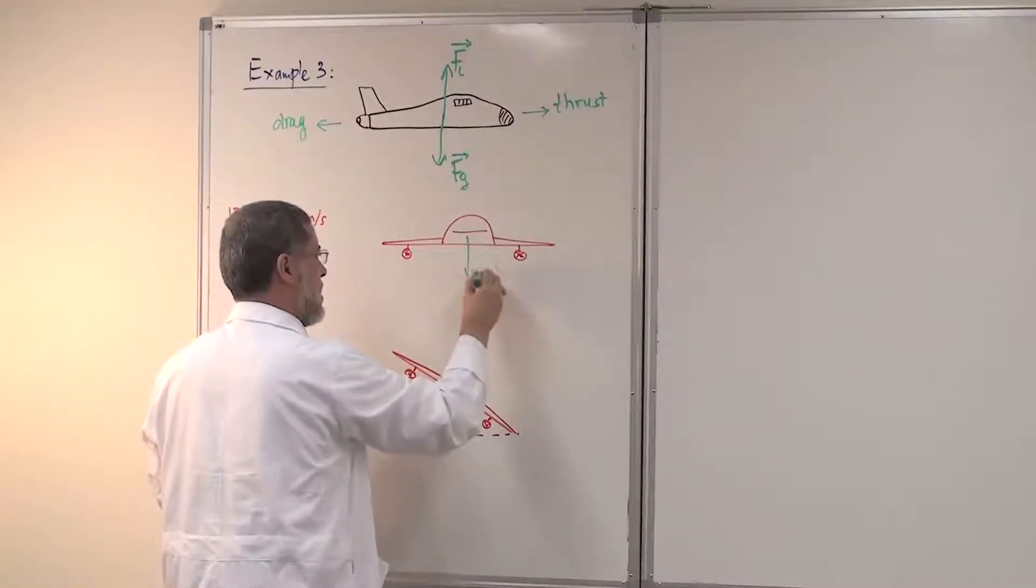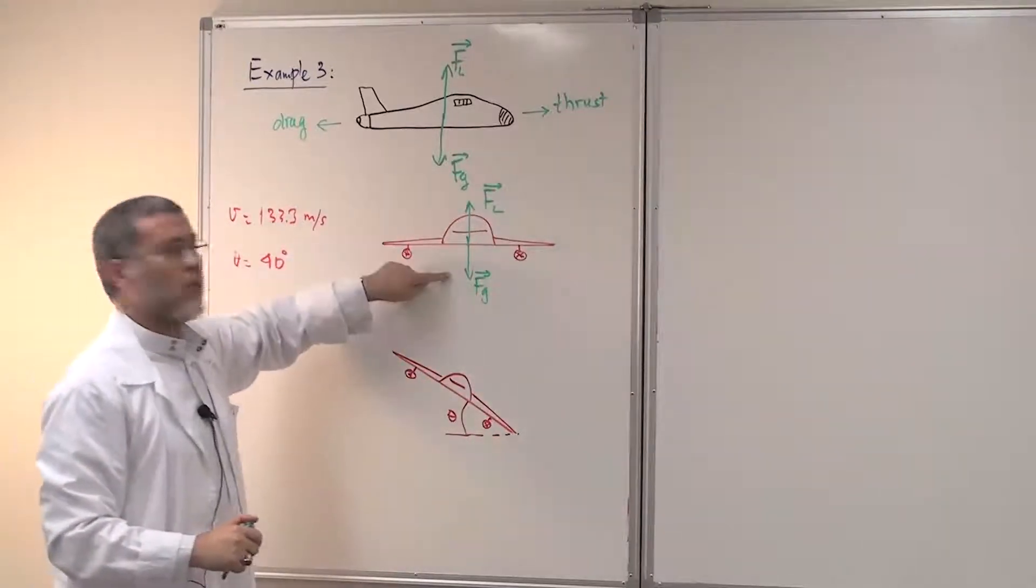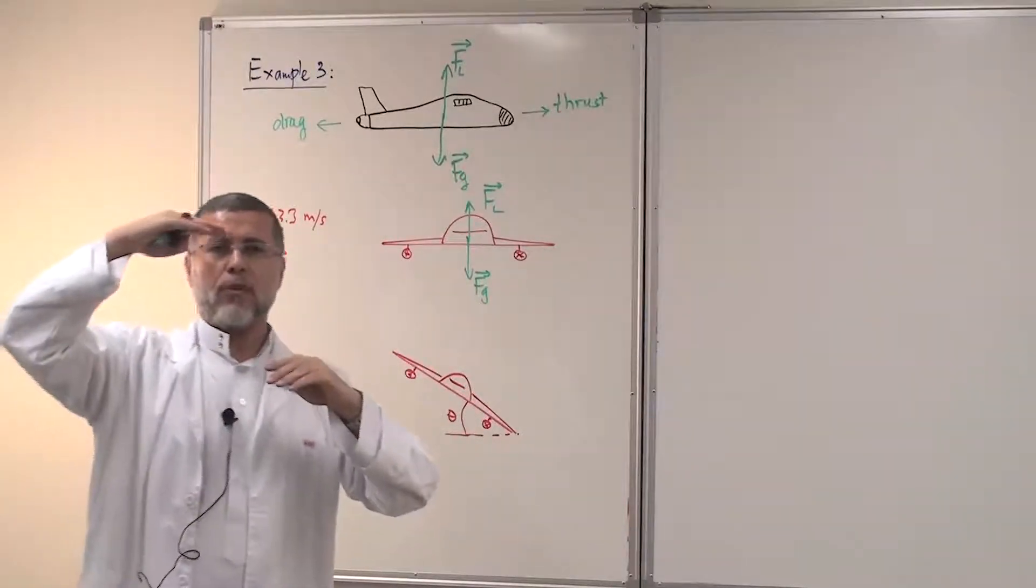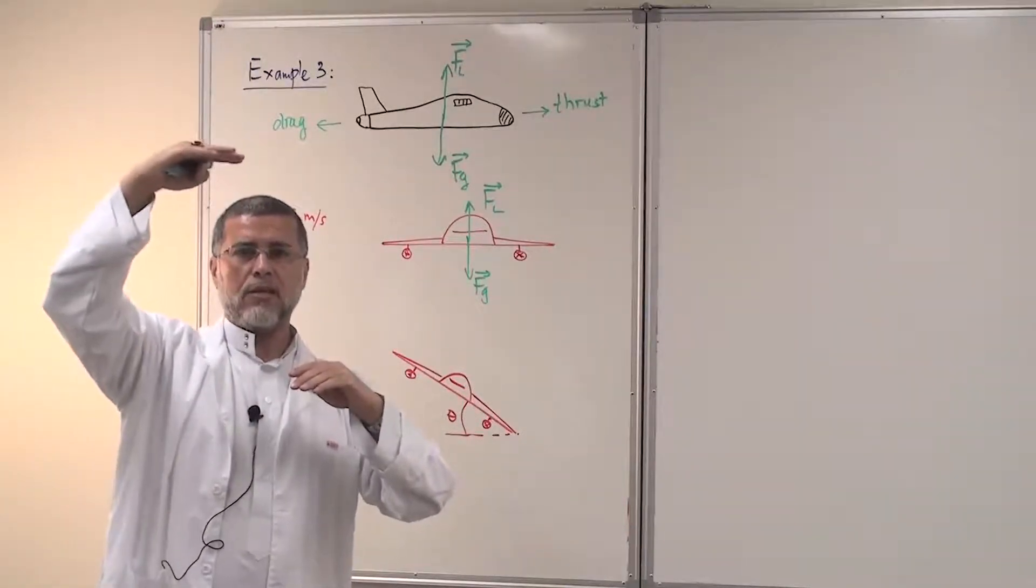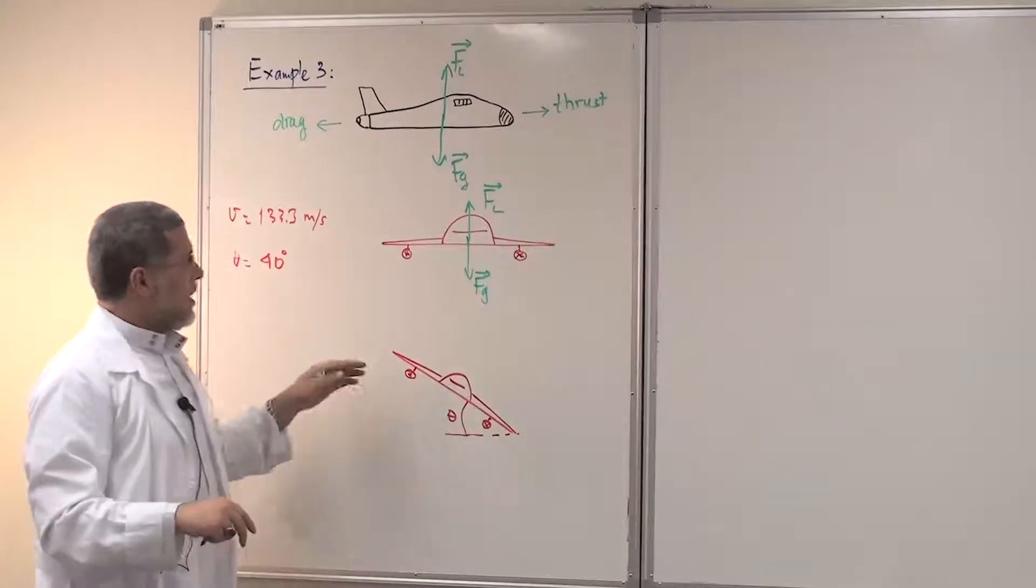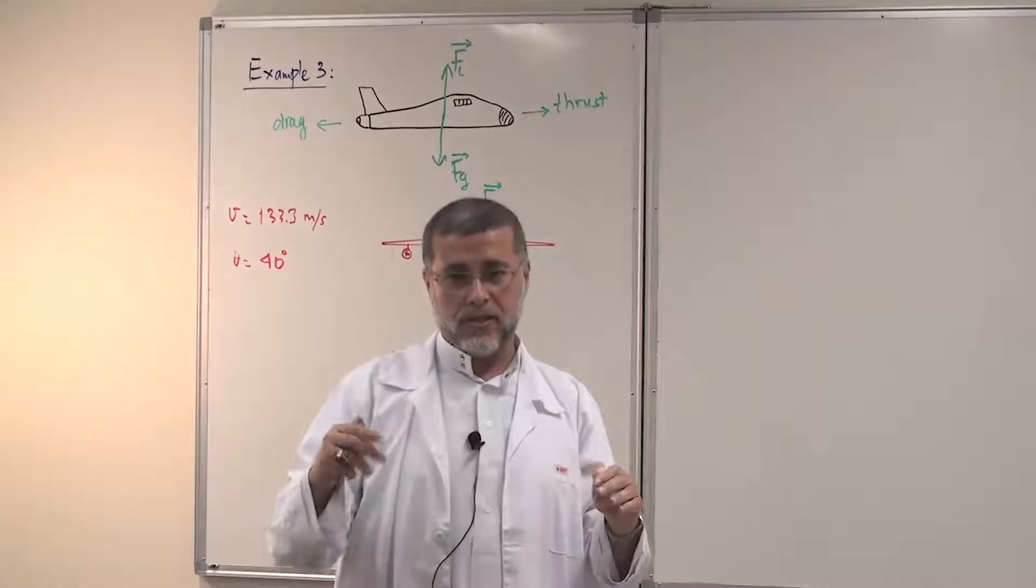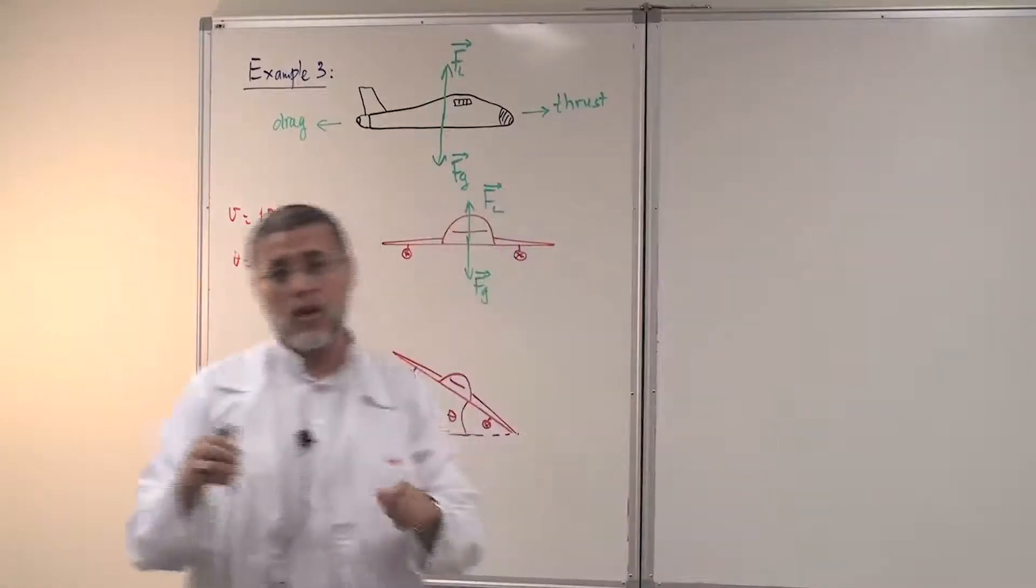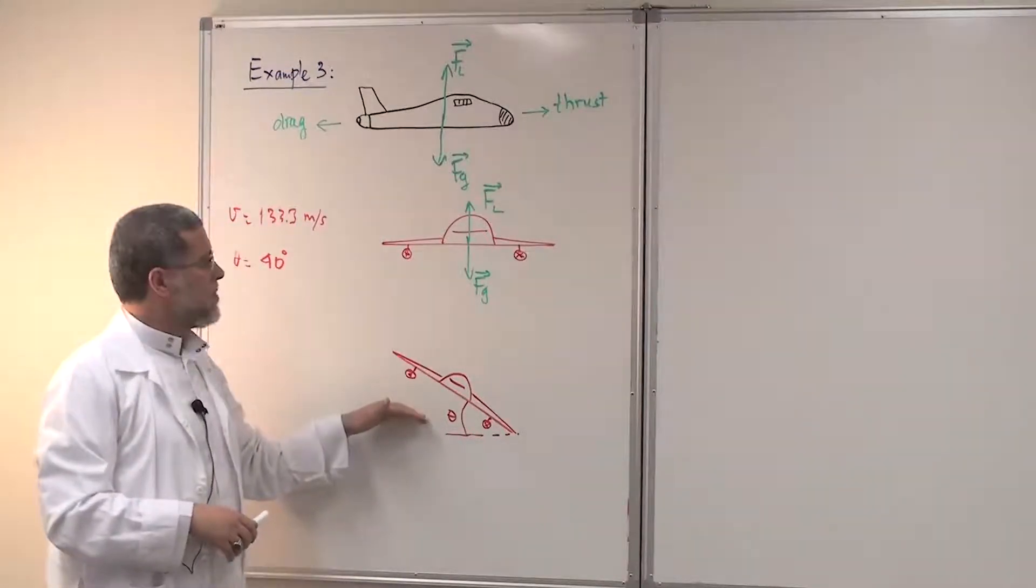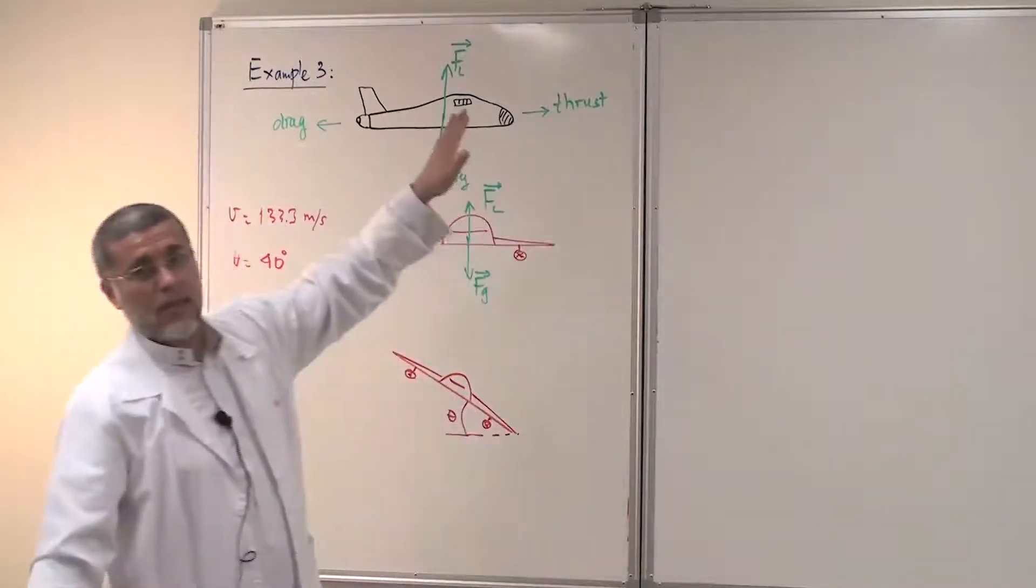FG will be down and FL will be upward. And these two forces are equal in magnitude and opposite in direction. And they will keep the airplane at a certain height or a certain elevation and moving horizontally. Now, when the pilot reaches the city or the airport, you notice sometimes he makes this maneuver here. And that maneuver, he tilts the airplane in this direction or in this direction.